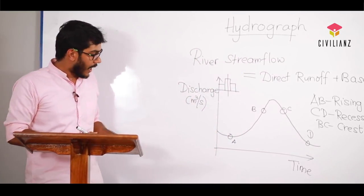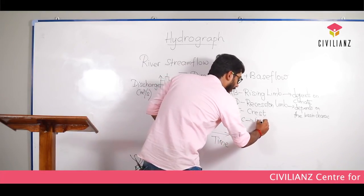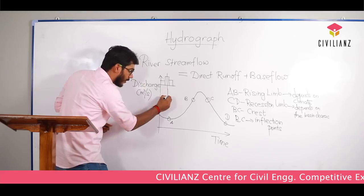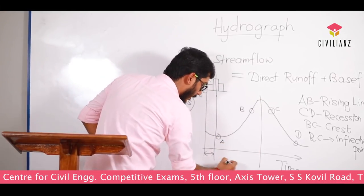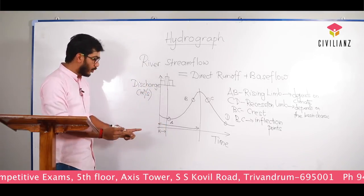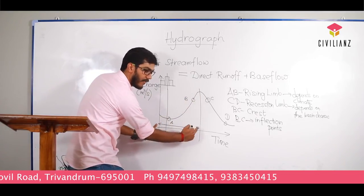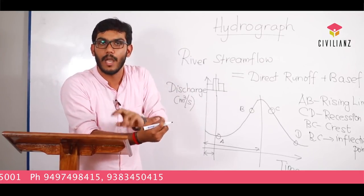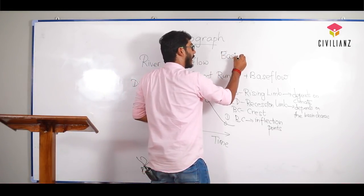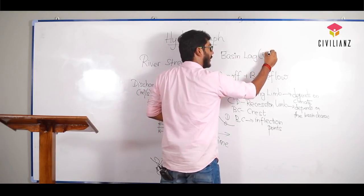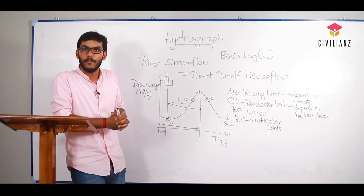The main points we know about are A, B, and C. The C point is called the inflection point. The maximum discharge occurs at a particular time, but the maximum rainfall is at a different time — there is a time difference between the two. This time difference is called the basin lag, denoted as TL. Thanks for watching. I will see you in the next class. Bye.